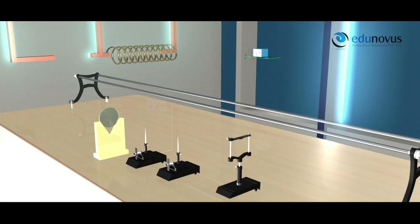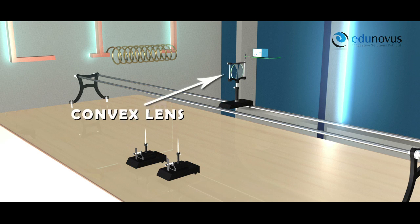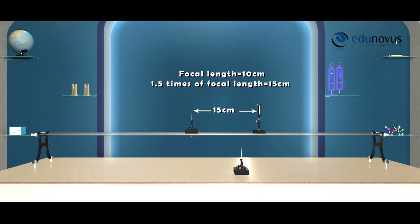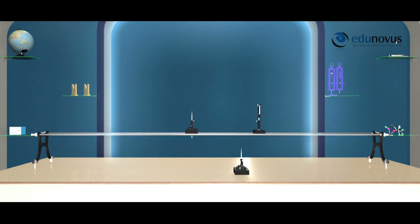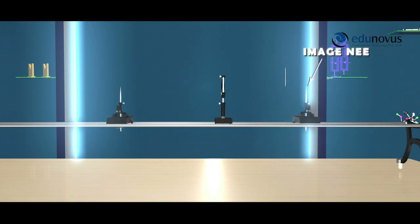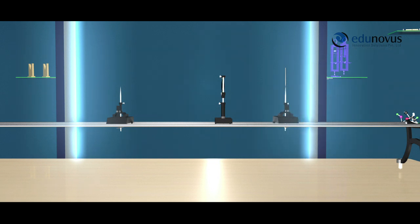Consider a convex lens and mount it on the optical bench at a convenient position. Now place an object needle at 1.5 times the rough focal length of the given convex lens. By adjusting the position of the object needle, you will observe an inverted image of the object needle on the other side of the lens. Now place the other needle on the optical bench and consider it as the image needle. Adjust the position of the image needle until you find the image of the object needle on top of the image needle. The distance between the object needle and the convex lens is considered as U, and the distance between the image needle and the lens is considered as V.